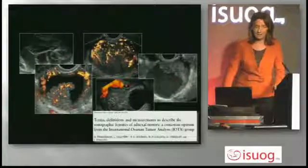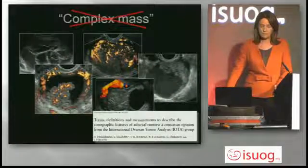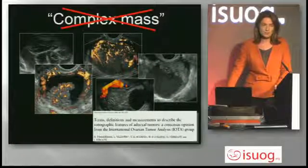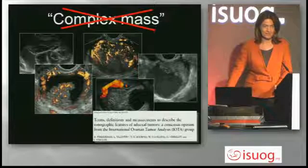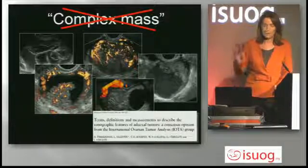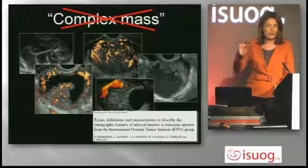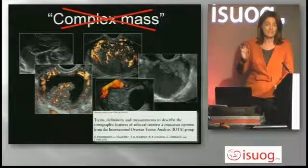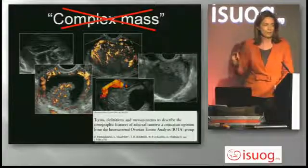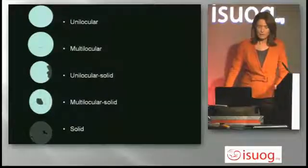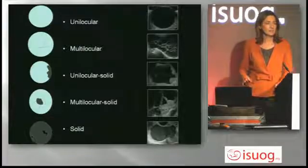According to the consensus, we no longer call ovarian masses 'complex masses' because each of them has to be described in detail for morphology, vascularization, and so on. The main classification is based on morphology.